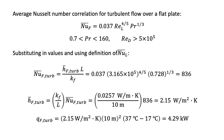Second, to find the average convection coefficient for turbulent flow, we select an average Nusselt number correlation as shown. Note we are a little lower than the Reynolds number range, which is acceptable because we are assuming the flow is tripped by natural convection. Substituting in values, we get a Nusselt number of 836, a convection coefficient of 2.15 watts per meter squared kelvin, and a heat transfer rate of 4.29 kilowatts. As expected, these values are all higher than those predicted for laminar flow due to turbulent mixing, which enhances heat transfer.